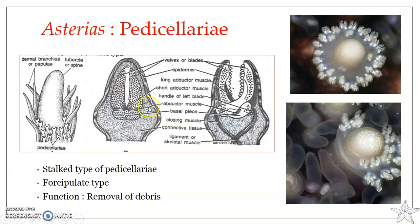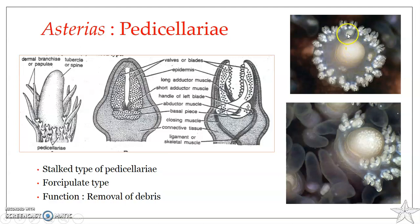Here you can see the structure. You have the tubercle or the spines found on the oral and the aboral surface, and surrounding that you can see the pedicillariae on the side. This is the spine or the tubercle, and surrounding that you can see the pedicillariae.